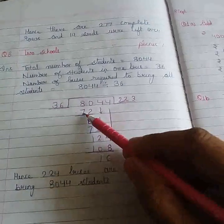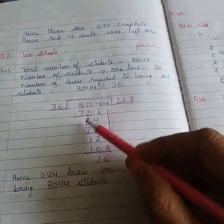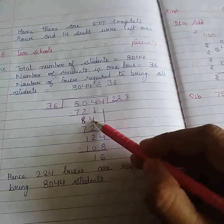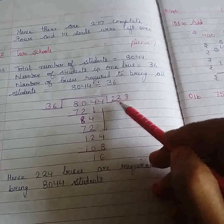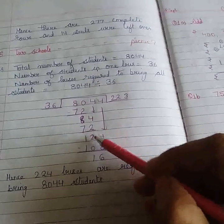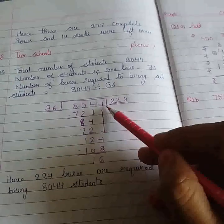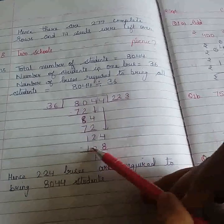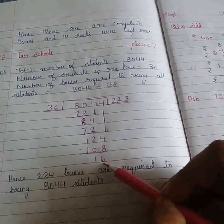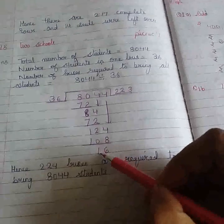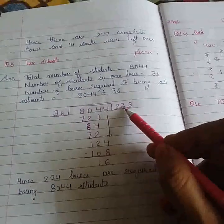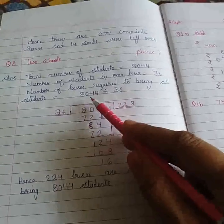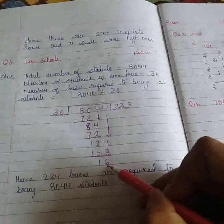Now we can see 36 times 2 is 72. Now subtract: 10 minus 2 is 8, 7 minus 7 is 0. Take this 4 down. Now it is 84. Again 36 times 2 is 72. 4 minus 2 is 2 and 8 minus 7 is 1. Now the last number 4 we will take down. Then 36 times 3 is 108. So 14 minus 8 is 6 and 1 minus 0 is 1. That means 223 buses are required for these many students, but still 16 students are left in the school only.